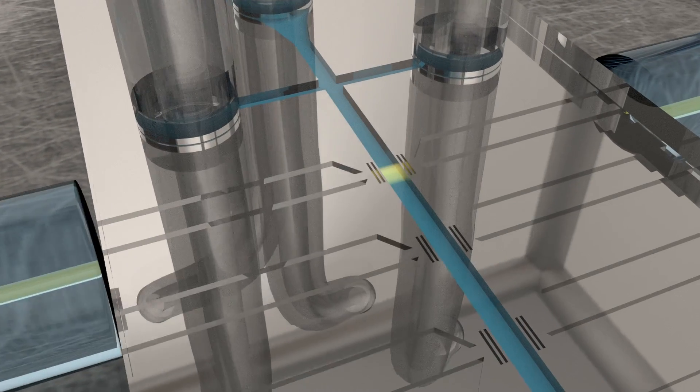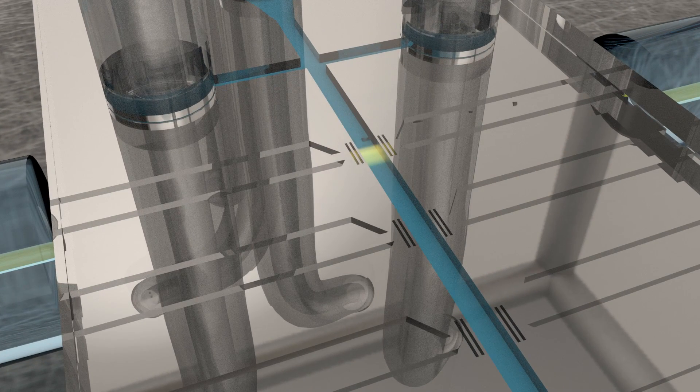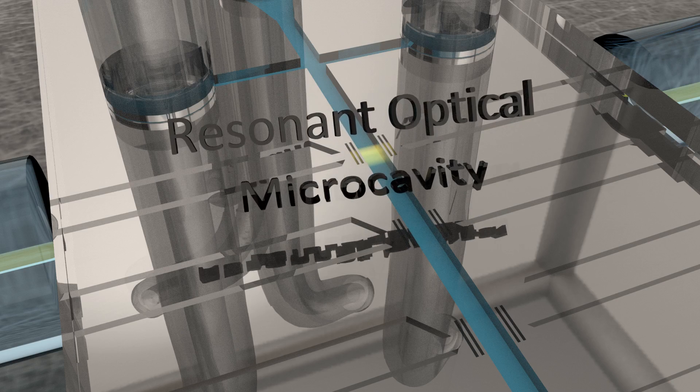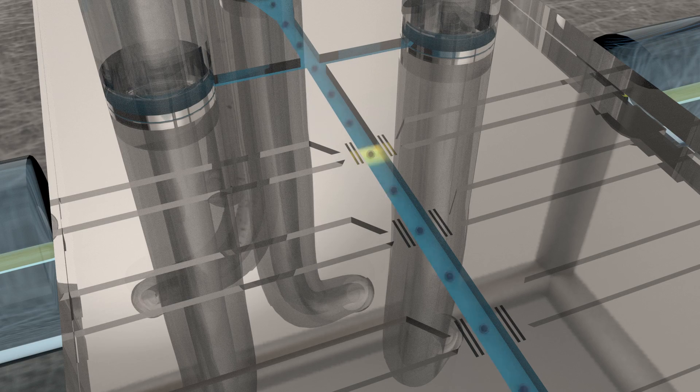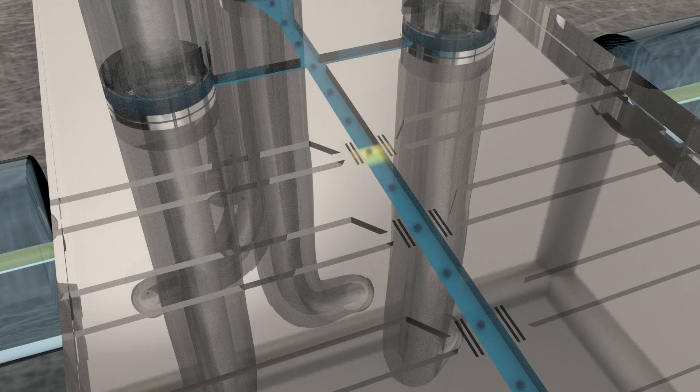The small bars introduced earlier are actually mirrors. Light bounces between them, creating a resonant optical microcavity. This cavity represents the heart of the sensor. It measures the refractive index in its vicinity.